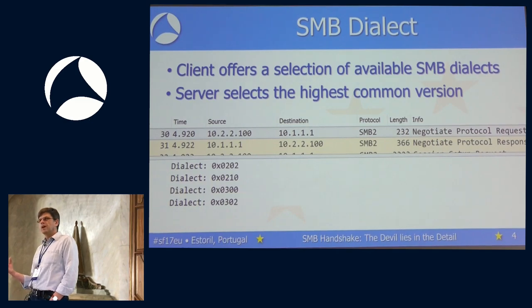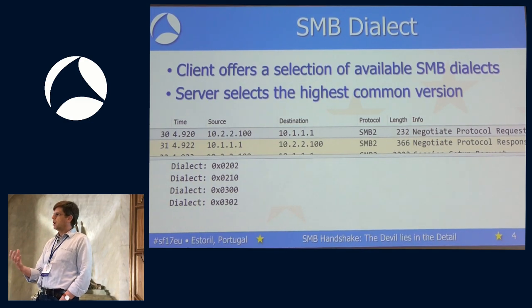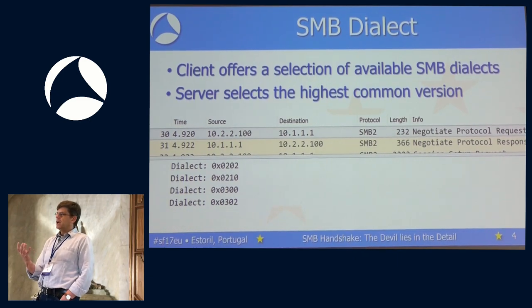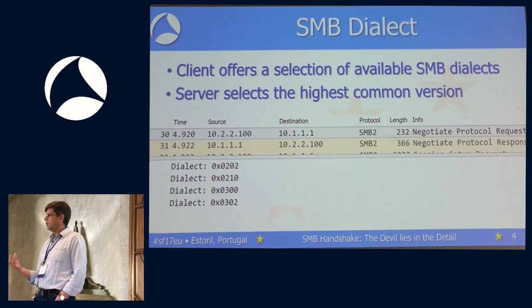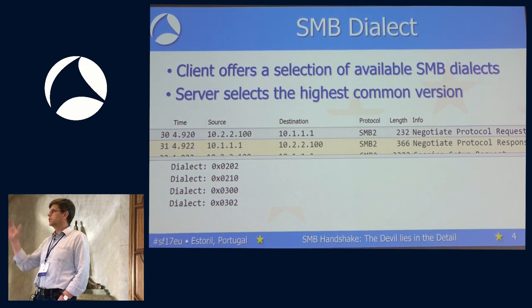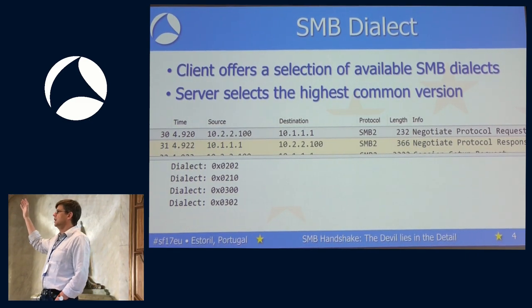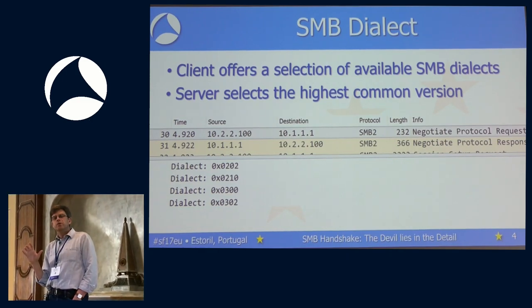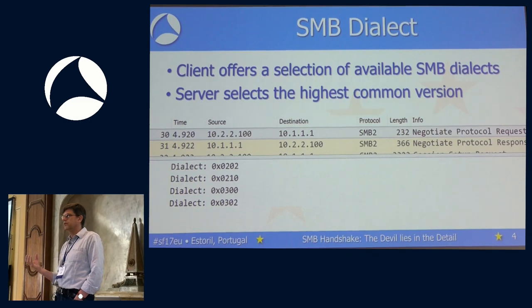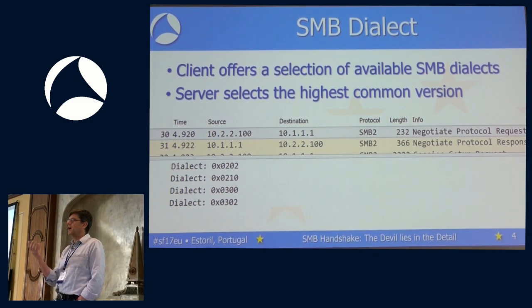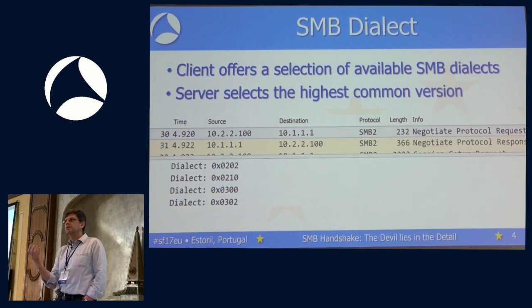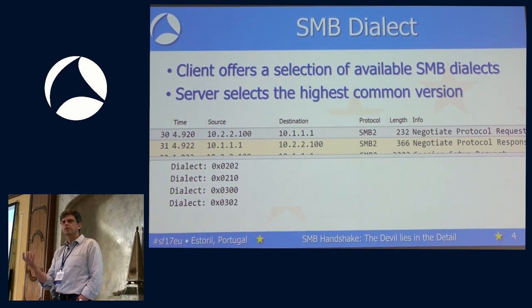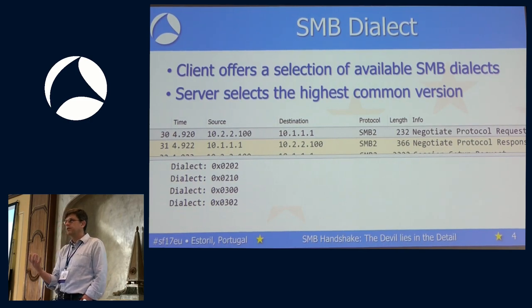By the beginning of this year, a set of vulnerabilities became known in the old SMB protocol — known as EternalBlue. This refers to a vulnerability in the old SMB protocol as found up to and including Windows XP. It allows an attacker, by crafting special packets, to take control of a vulnerable workstation or server. By now, we have seen various waves of malware exploiting that vulnerability.